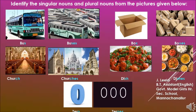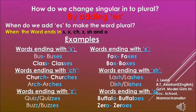But how do we know where to add S and where to add ES? Now, whenever a noun ends with the letters S, X, Z, SH, or O, we have to add the letters E and S to make the noun into a plural noun. Here are some examples for you.